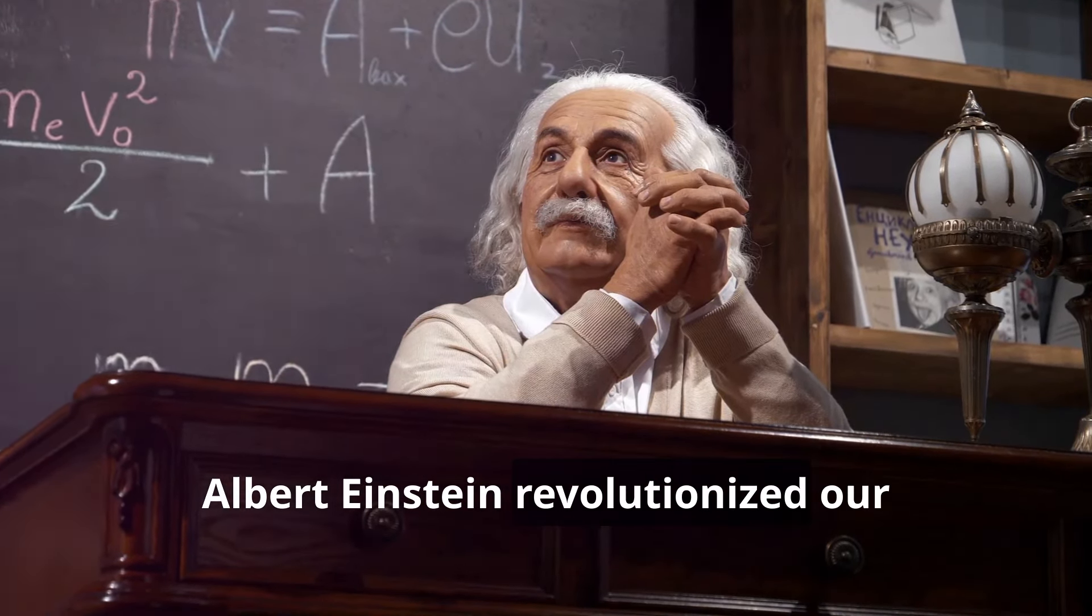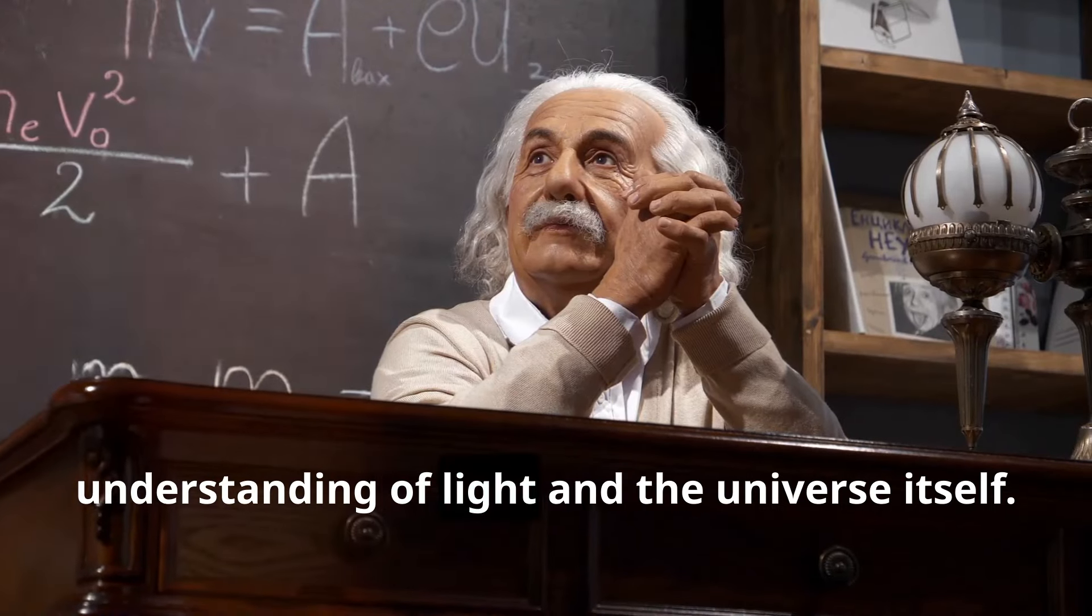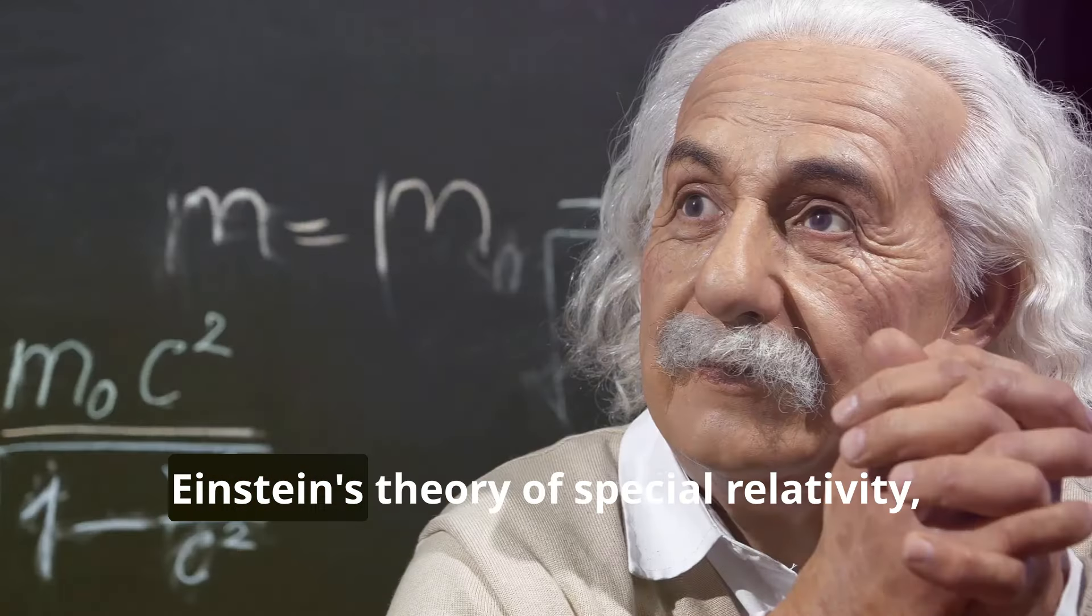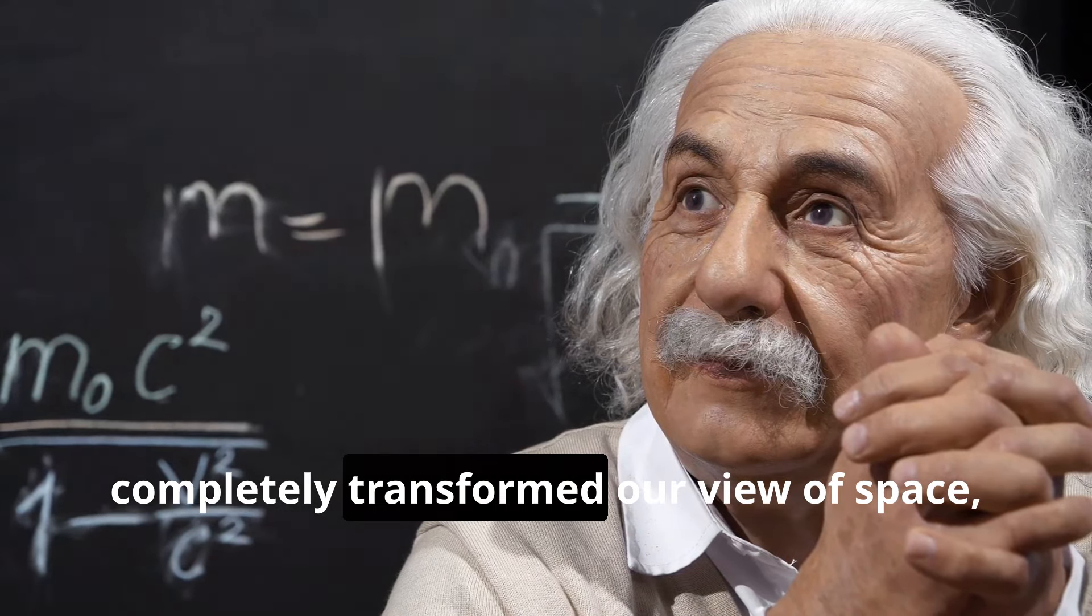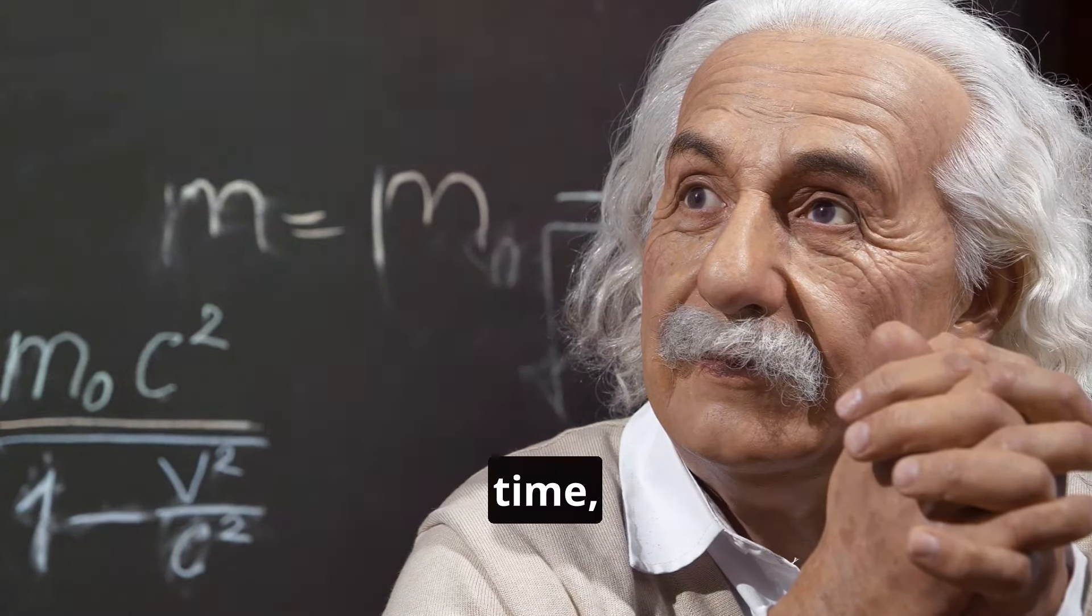It wasn't until the early 20th century that a young physicist named Albert Einstein revolutionized our understanding of light and the universe itself. Einstein's theory of special relativity, published in 1905, completely transformed our view of space, time, and the speed of light.